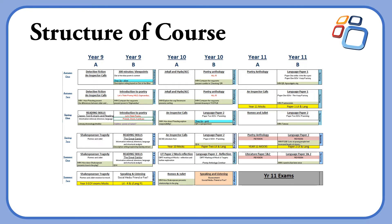Whilst in year 10 and 11 students will have a separate English language and literature teacher — indicated by the A for literature and the B that you can see on the screen — in year nine students would generally be taught by one teacher. We still aim to cover the same content but students develop knowledge and understanding in both areas.